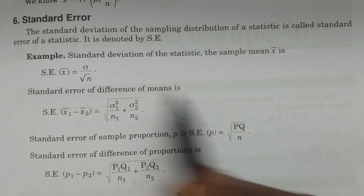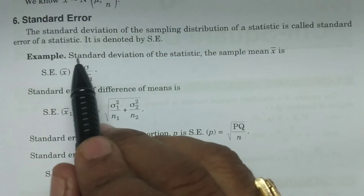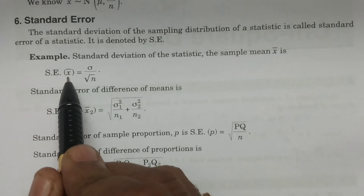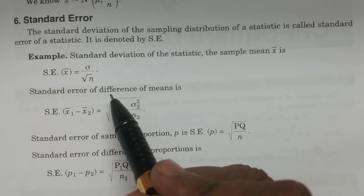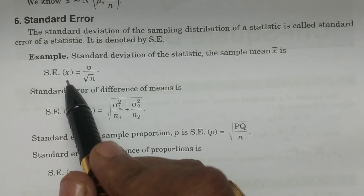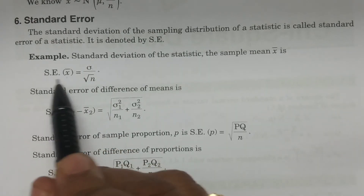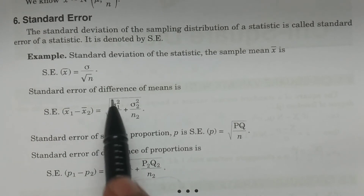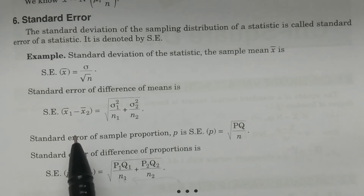Standard error is denoted by SE. For example, the standard deviation of x-bar is σ/√n. If x₁, x₂, ..., xₙ are drawn from a normal population and x-bar = (1/n)Σxᵢ is the sample mean, then the standard deviation of x-bar is σ/√n. That is nothing but the standard error of x-bar. The standard deviation of a particular statistic is nothing but its standard error.